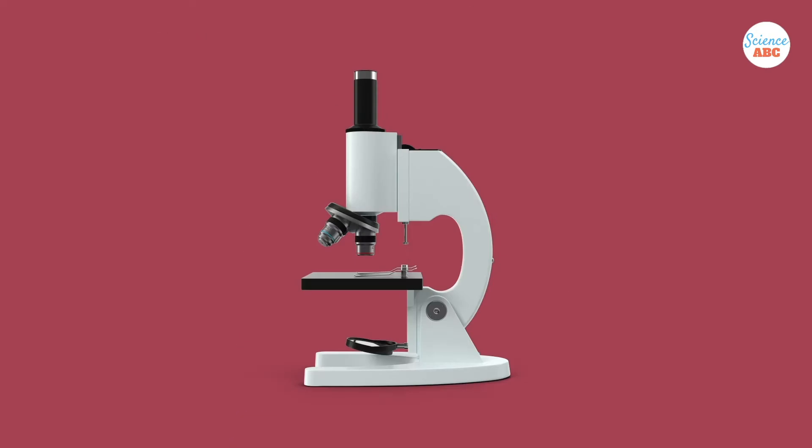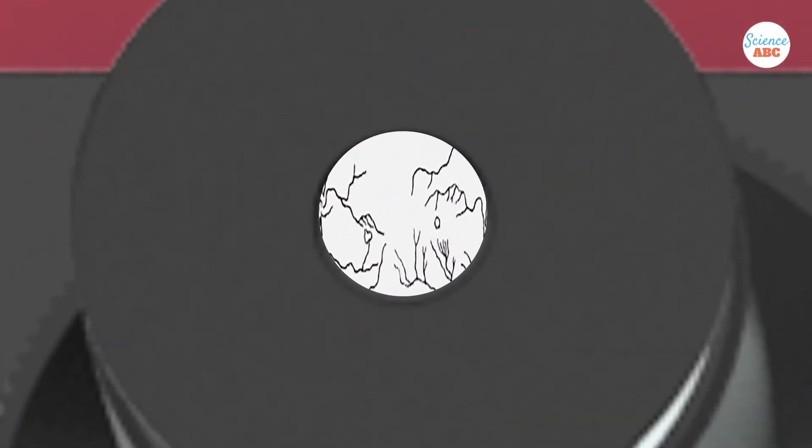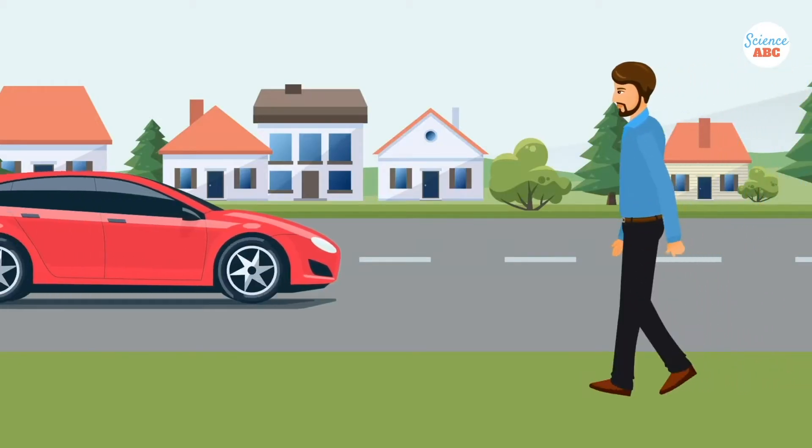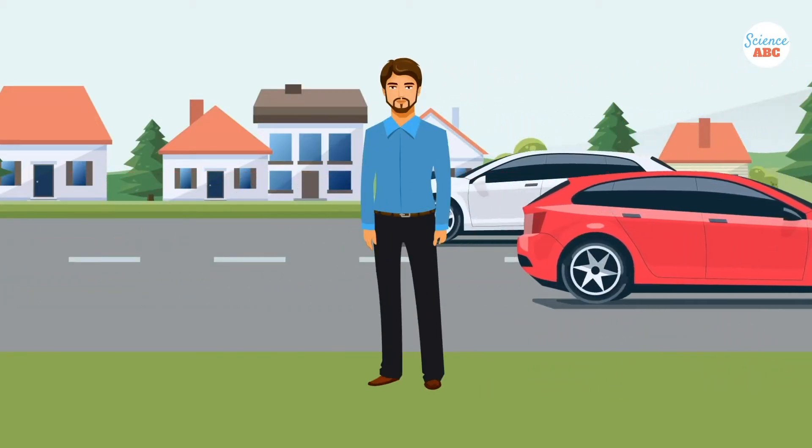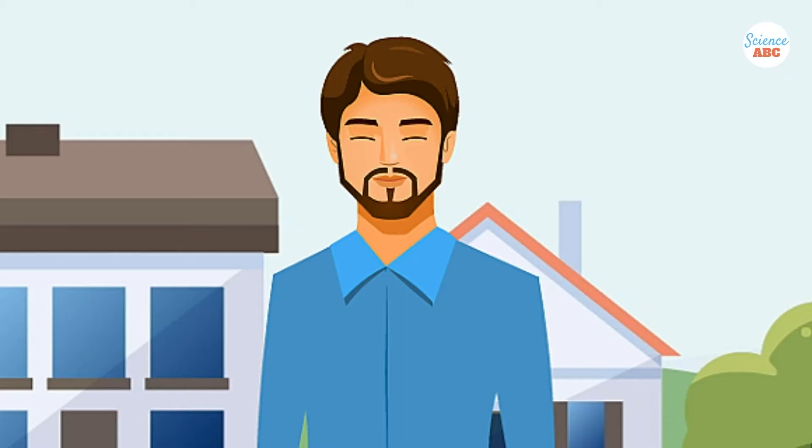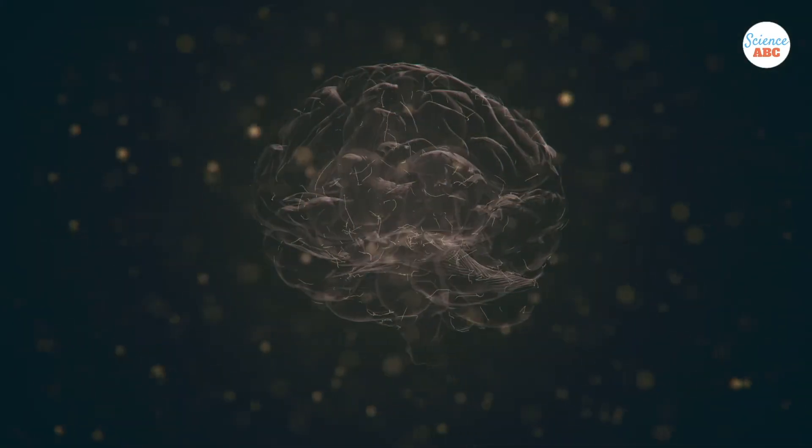Since Johannes Perkinjee discovered neurons in 1832, the world of science has never been the same. The discovery has come to explain almost everything in our human nature, from basic instincts like blinking to how we exist as conscious beings.